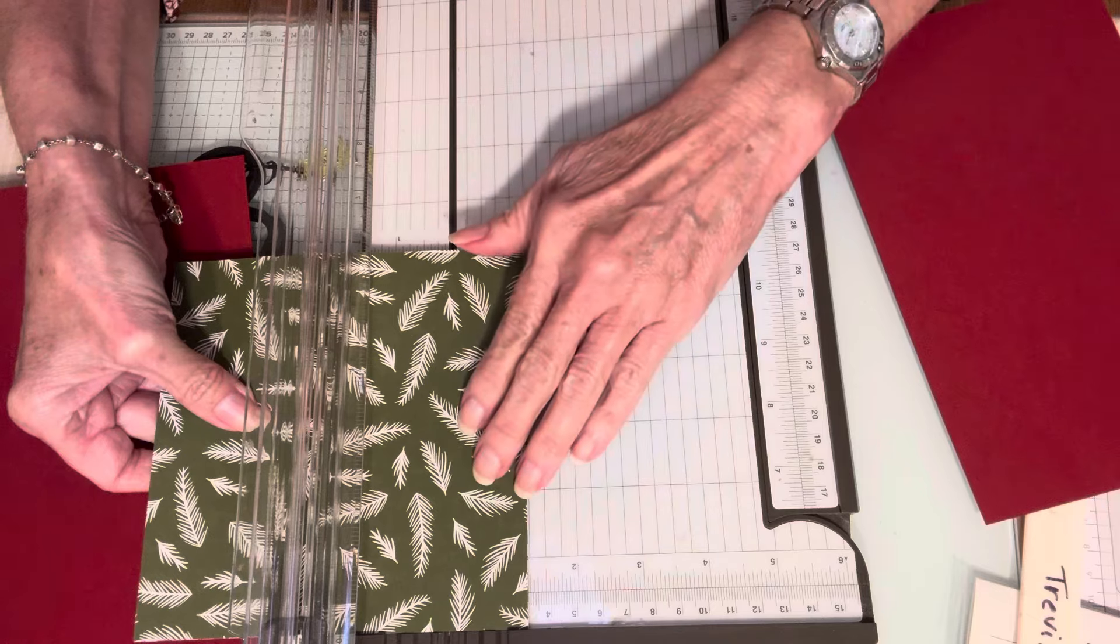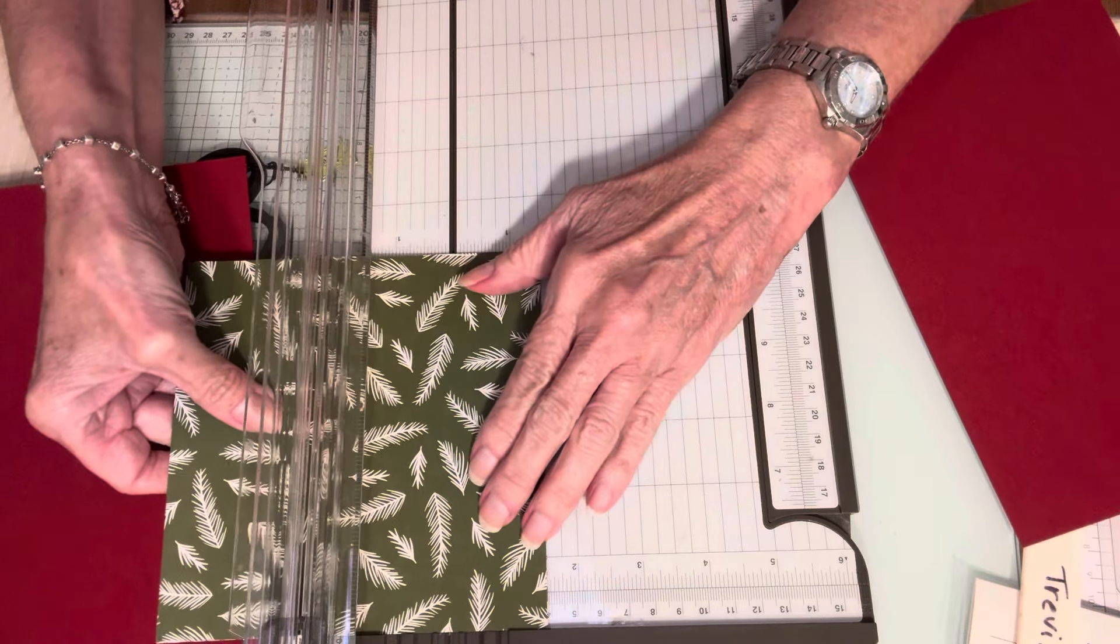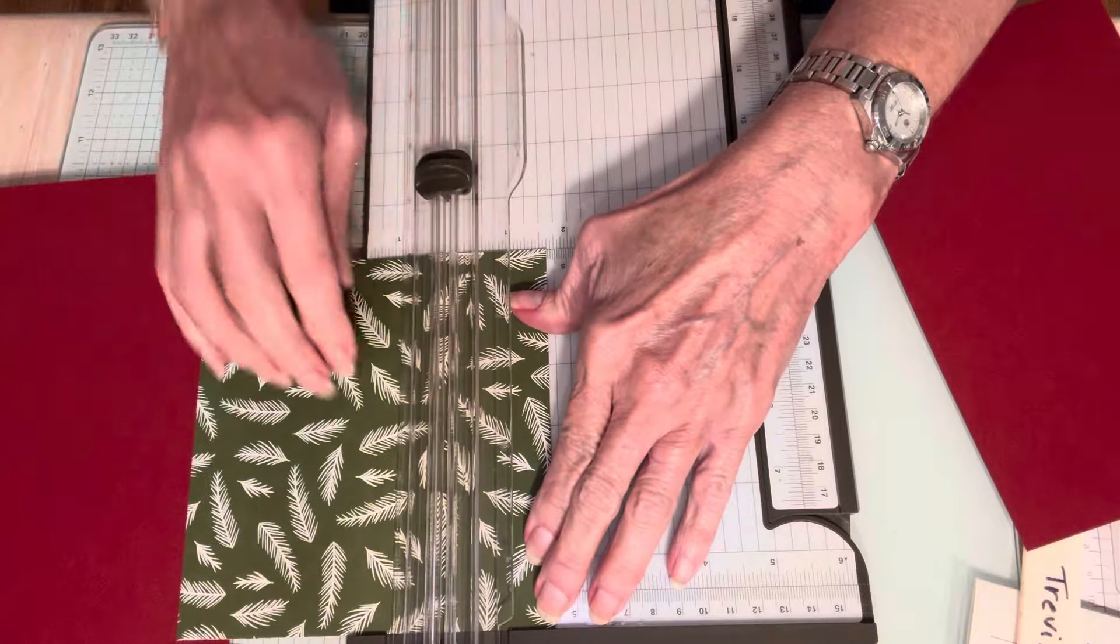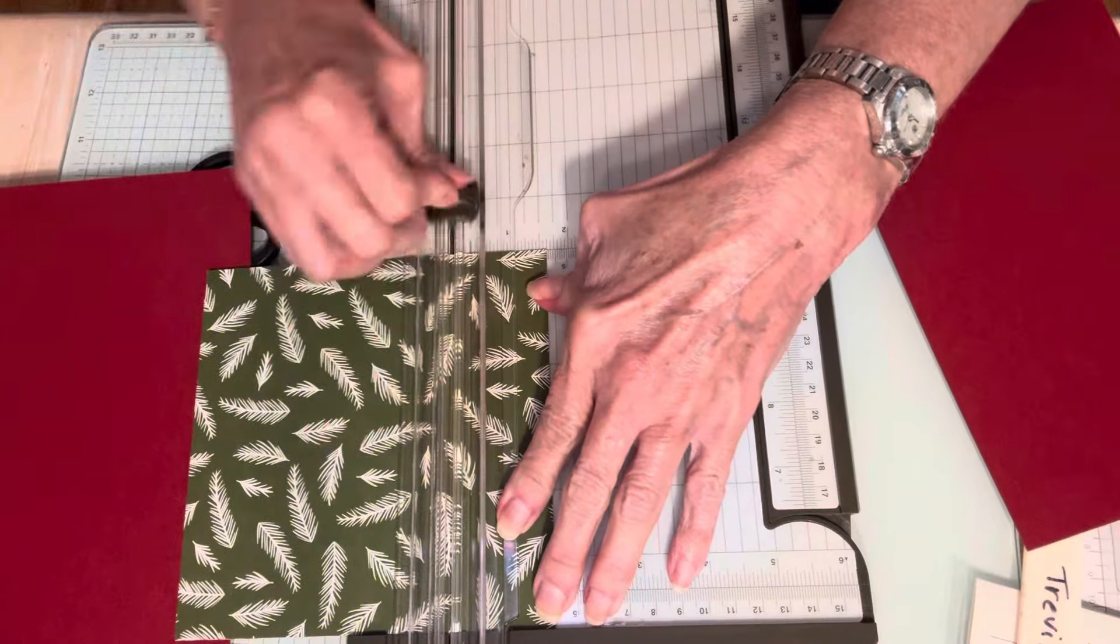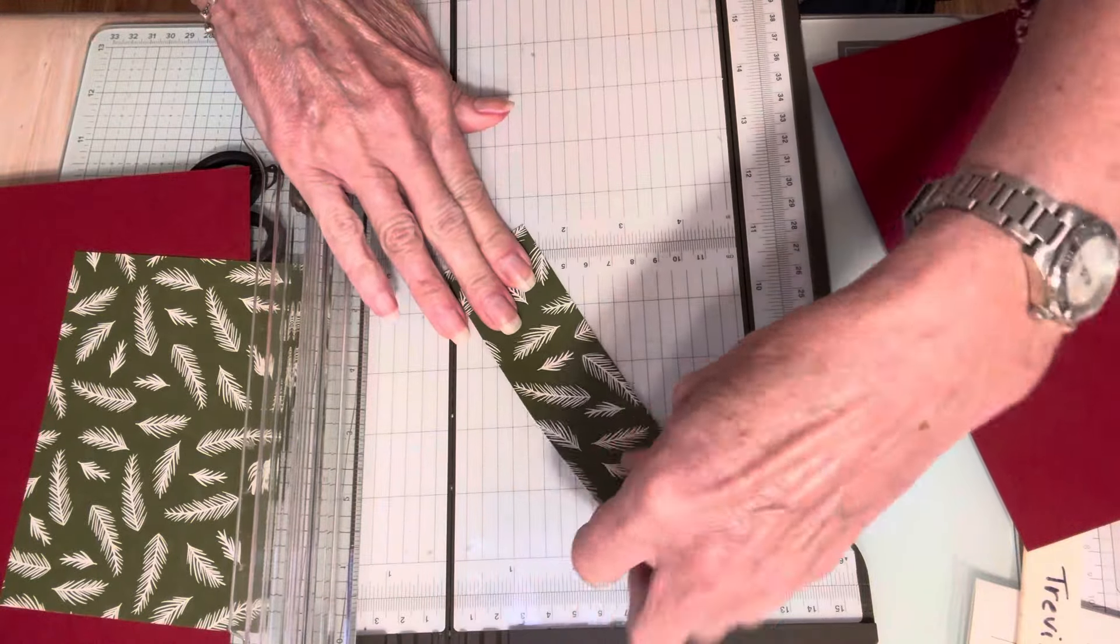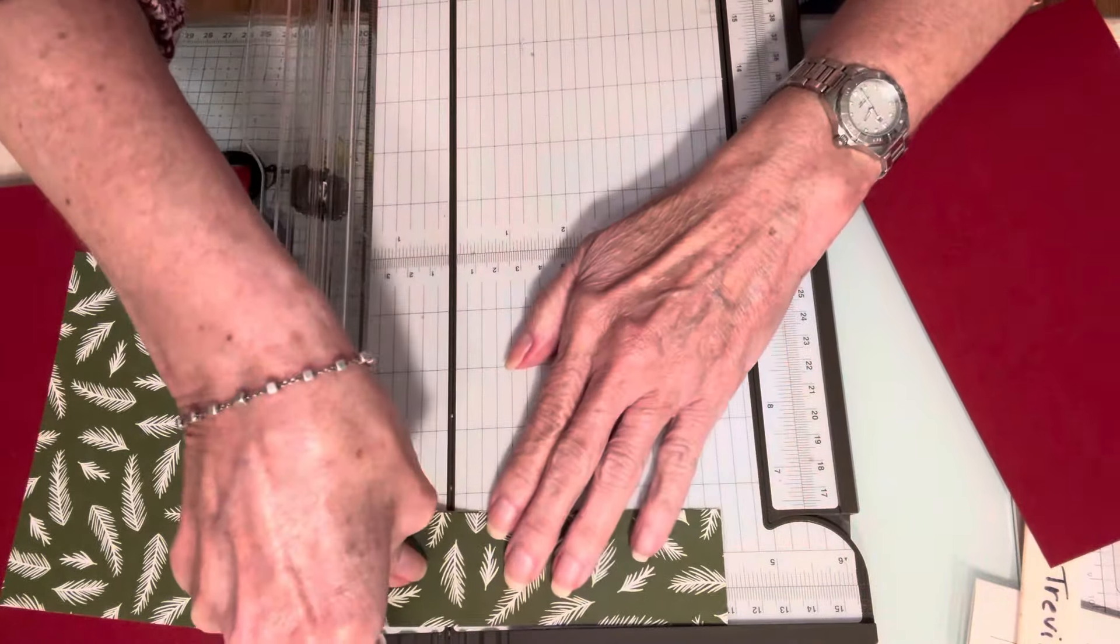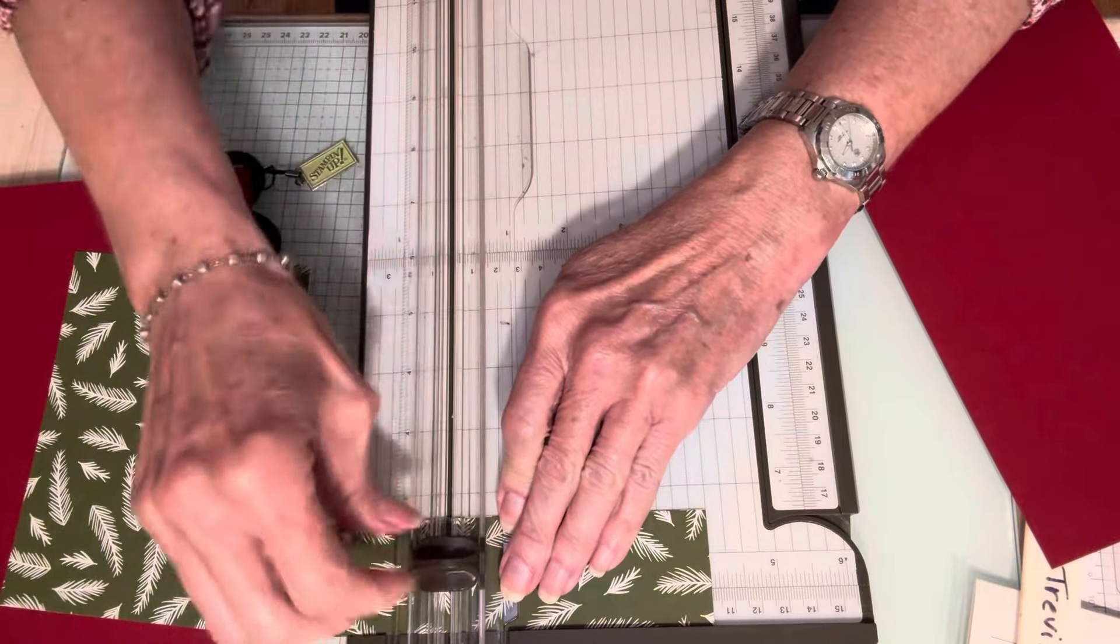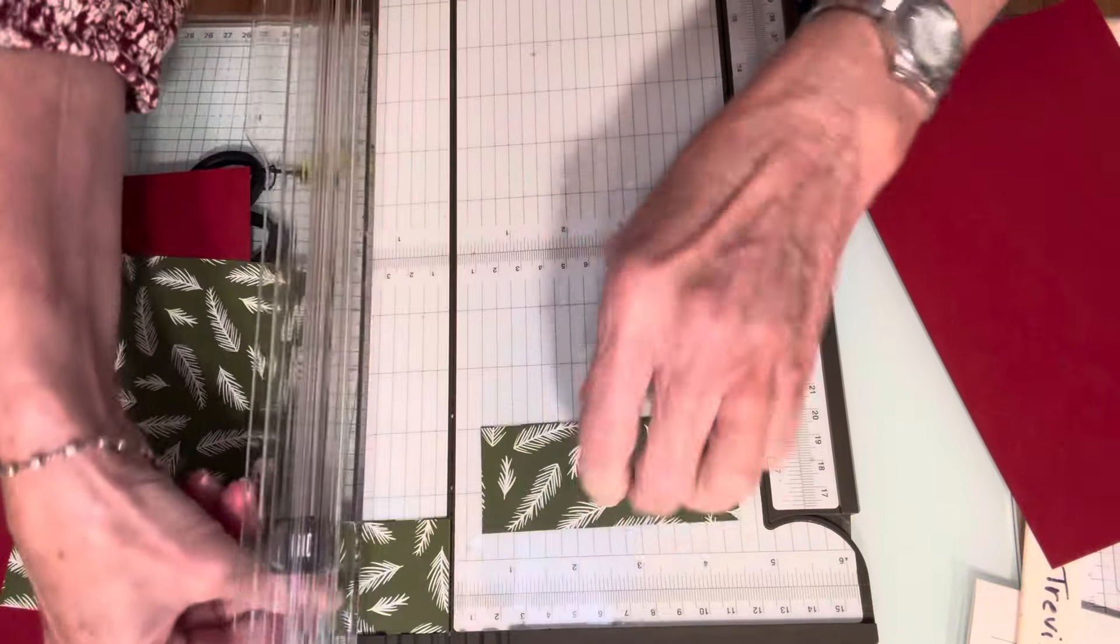Since they're Designer Series paper, you can do this on your paper trimmer. Five and one and five eighths. I'm going to make these one and five eighths by four. I'm going to cut this down and make this four. So I think I have everything cut now.